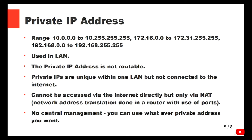The private IP range is 10.0.0.0 to 10.255.255.255, and the most common range is 192.168.0.0 to 192.168.255.255. They are used in LAN, they're not routable, and you can have another office with exactly the same IP addresses. They cannot be accessed directly via the internet — only via NAT, network address translation. There is no central management, so you can use whatever address you want. However, there is a protocol in the router called network address translation which helps us access those devices externally.